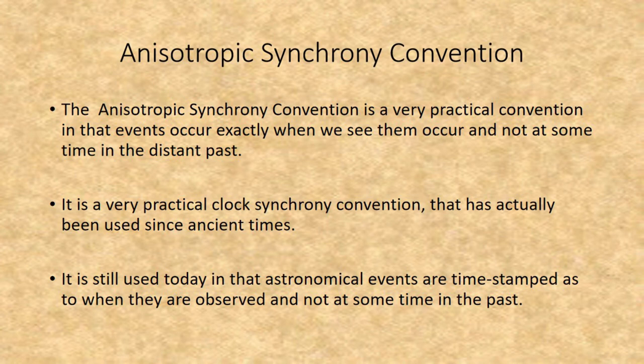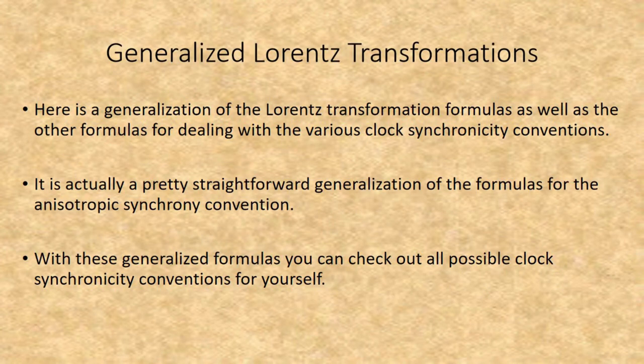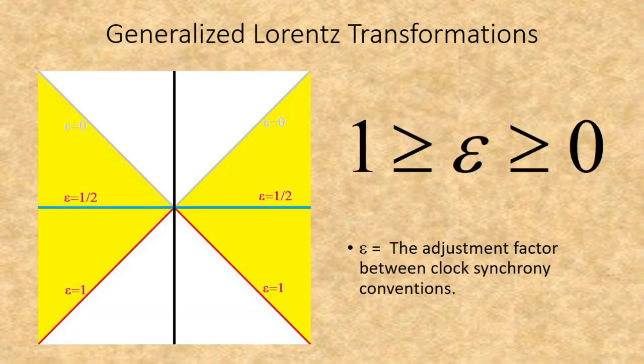Here is a generalization of the Lorentz transformation formulas, as well as other formulas for dealing with the various clock synchrony conventions — a pretty straightforward generalization for the anisotropic synchrony convention. With these generalized formulas, you can check out all possible clock synchrony conventions for yourself. The key to these conventions is the adjustment factor epsilon, which can have a value from 0 to 1, covering the entire range from the surface of the past light cone to the surface of the future light cone. This range also corresponds to the shift resulting from different frames of reference, meaning there is nothing here outside the realm of standard relativity.